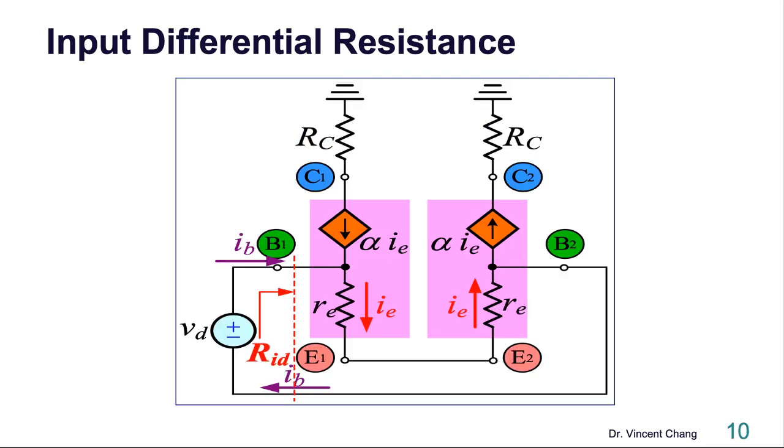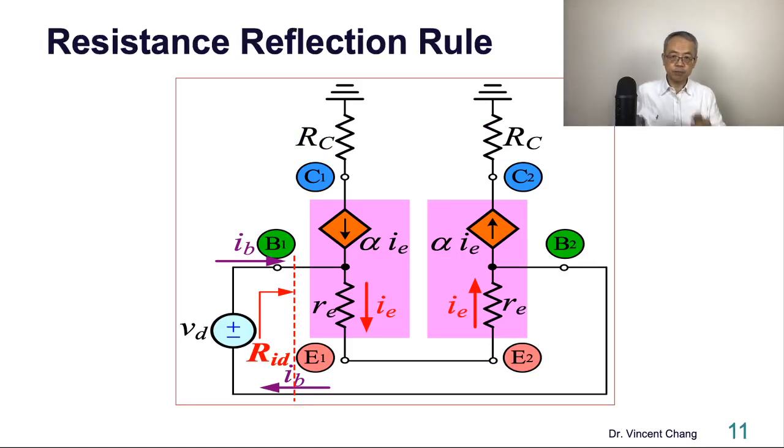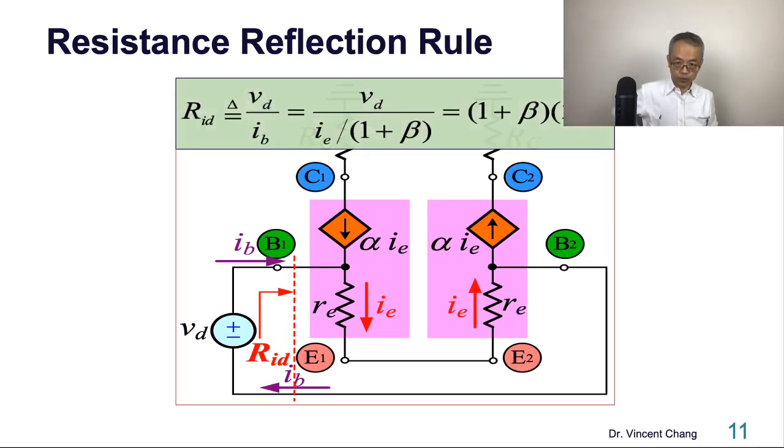So if you have any doubt on this, then you have to go back to the small signal equivalent circuit. So based on the small signal equivalent circuit, I said this earlier. Resistance RRR. Triple R. Resistance reflection rule. Right? So the base current is the emitter current divided by one plus beta.